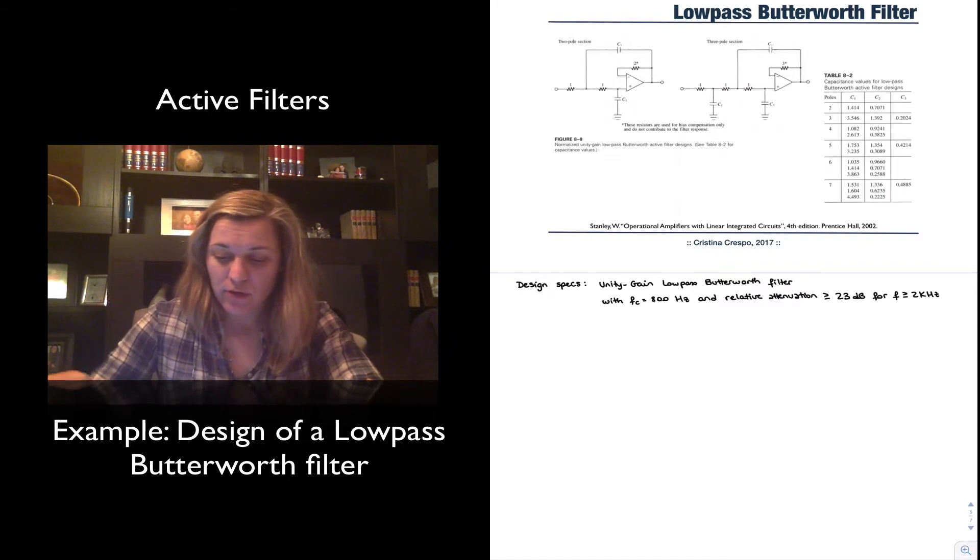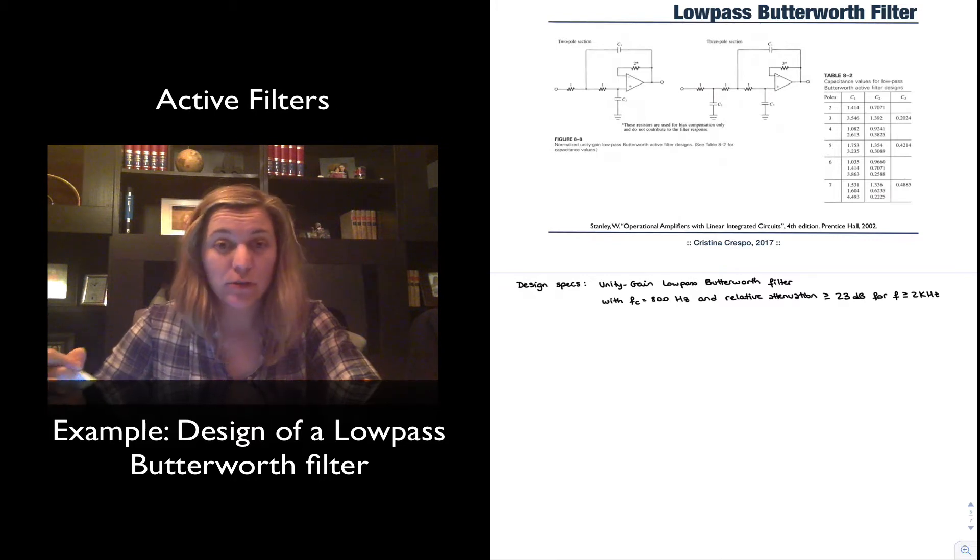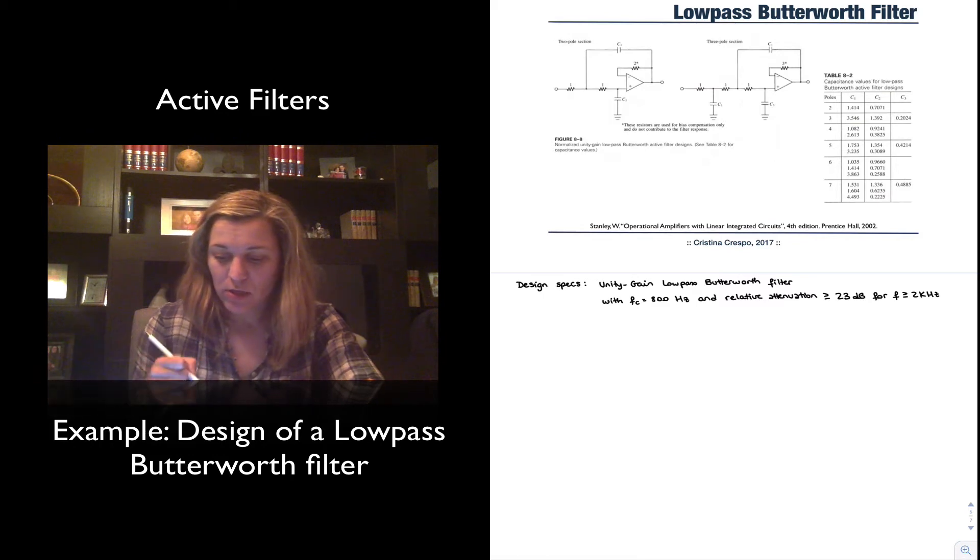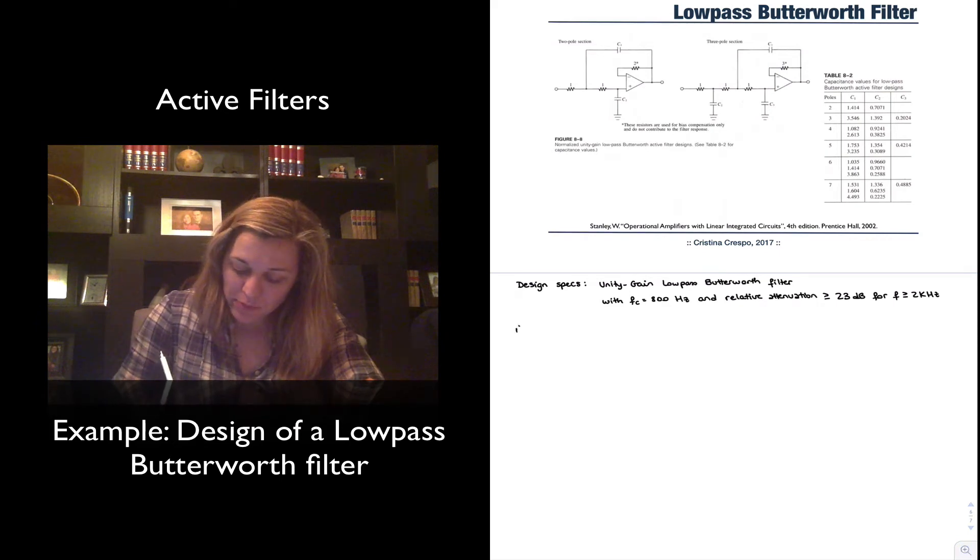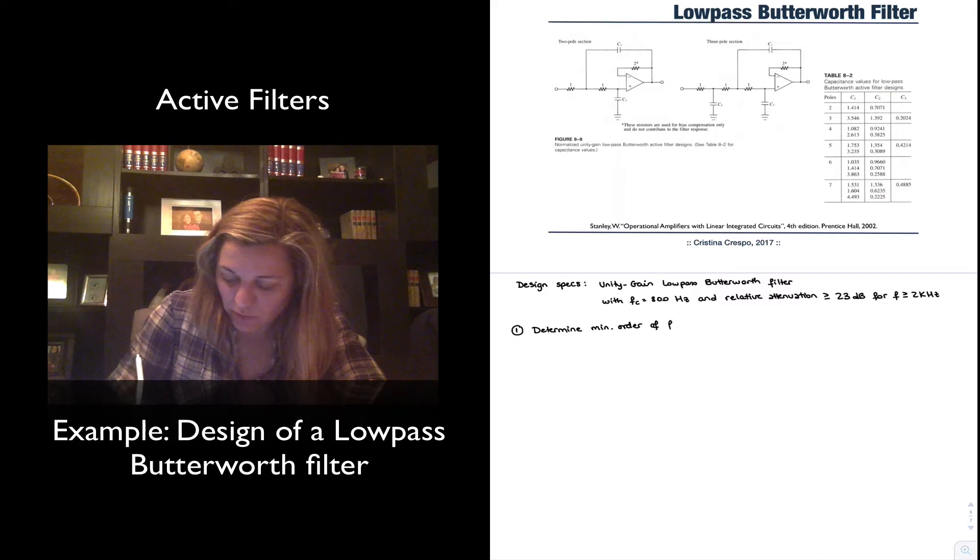23 dB is the minimum relative attenuation in the stop band. I have displayed here the two-pole and three-pole sections, as well as the table for the low-pass Butterworth filters. And so we can proceed with the design. I've displayed those there so we have them handy. And the first step we have mentioned was to determine the order of the filter that we will need. So step one is determine minimum order of filter needed to meet the specs. So basically that's the value of n.